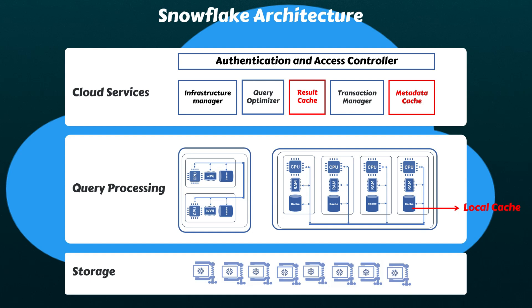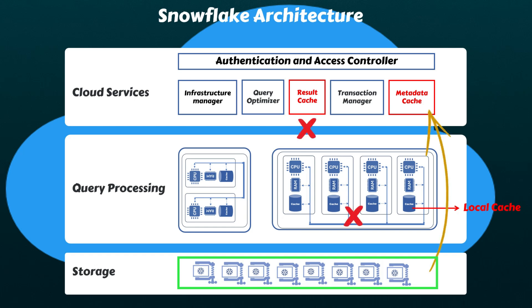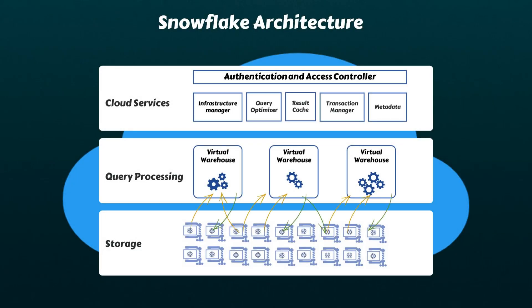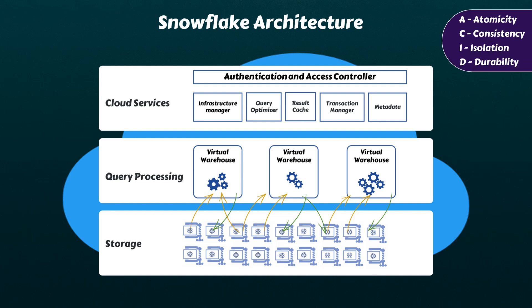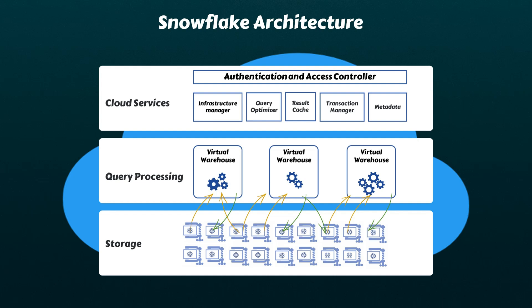Even though data is cached at various levels, Snowflake treats the data in its storage layer as the single source of truth. When the source data is modified, Snowflake automatically invalidates the corresponding caches and updates metadata accordingly. Multiple virtual warehouses and users can simultaneously read, write, and modify the data stored in the storage layer. Snowflake ensures the integrity of data involved in these transactions by adhering to ACID transaction policies, achieved through the transaction manager process in the cloud services layer, which coordinates concurrent data access and modification operations seamlessly without conflicts.